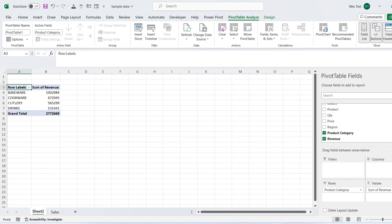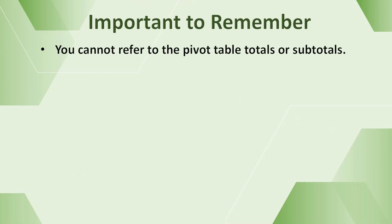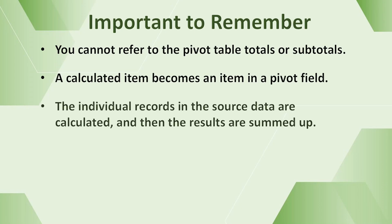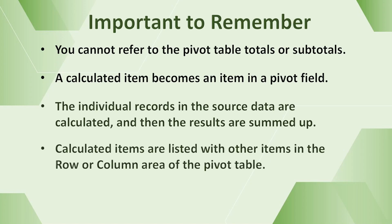Pivot table calculated items allow you to perform mathematical calculations with your item list using any Excel mathematical operators. The only limitation is that you cannot reference any cells. Calculated items can be used to calculate changes between items, such as month or year values, averages, or summations. When working with calculated items, remember that you cannot refer to pivot table totals or subtotals. A calculated item becomes an item in a pivot field. The individual records in the source data are calculated first, and then the results are summed up.